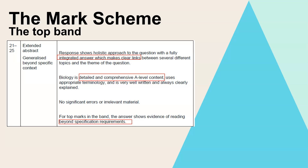For A-level standard you need to link it to an A-level example, and one that I think is really good is clonal expansion in immunity, because that's an example of mitosis that you don't know at GCSE and it's really important in terms of being able to make memory cells, plasma cells and therefore antibodies.